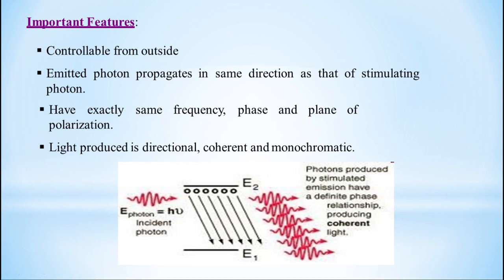The emitted and stimulating photons have exactly the same frequency, same phase and same plane of polarization. That means they are coherent with each other. Light produced is directional, coherent and monochromatic. This is the property of laser. Photons produced by stimulated emission have a definite phase relationship, producing coherent light.